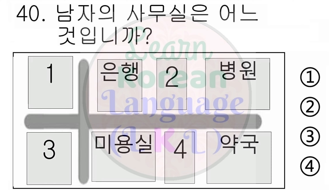다음은 30번부터 33번까지 문제입니다. 다음을 듣고 물음에 알맞은 대답을 고르십시오. 보기 문제. 1번. 아니요, 컴퓨터예요. 2번. 네, 컴퓨터가 있어요. 3번. 네, 컴퓨터가 없어요. 4번. 아니요, 컴퓨터가 아니에요. 정답은 2번입니다.